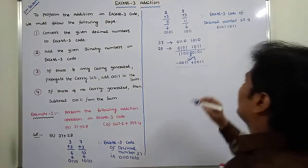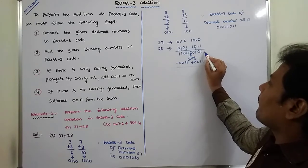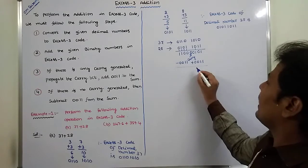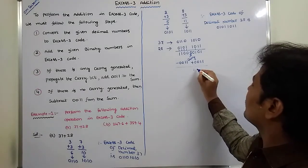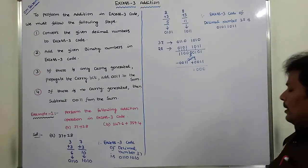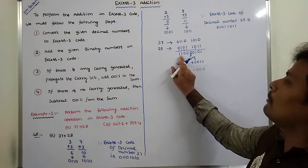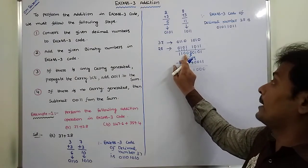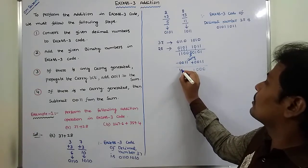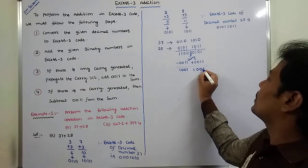For this group: 0101, decimal equivalent is 5. 5 plus 3 is 8, so that is 1000. For the next group: 1100, decimal equivalent is 12. 12 minus 3 is 9. 9 is 1001. So this group gives 1001.